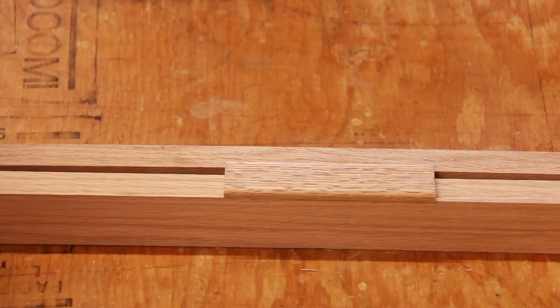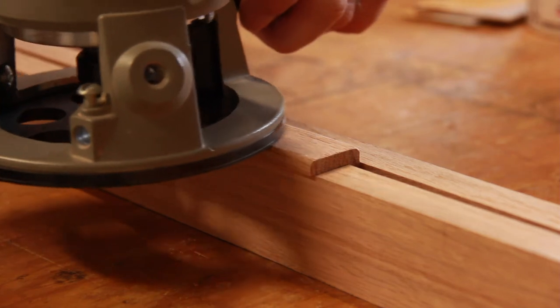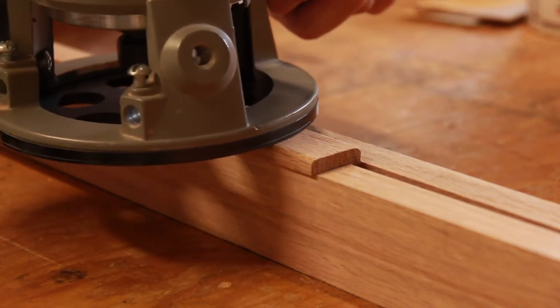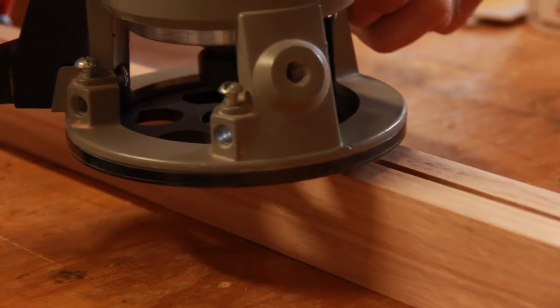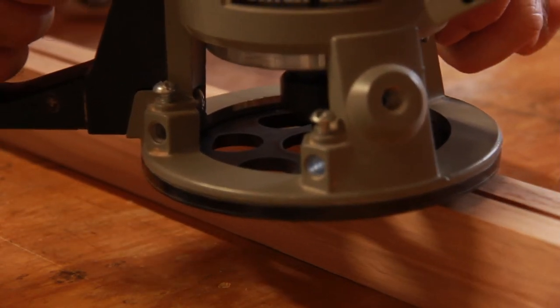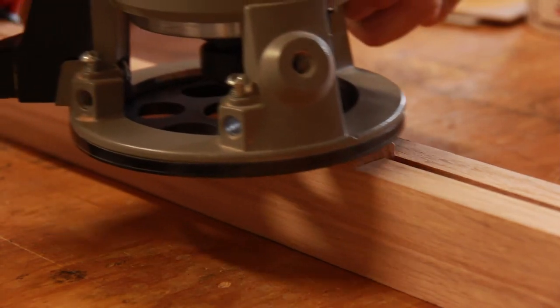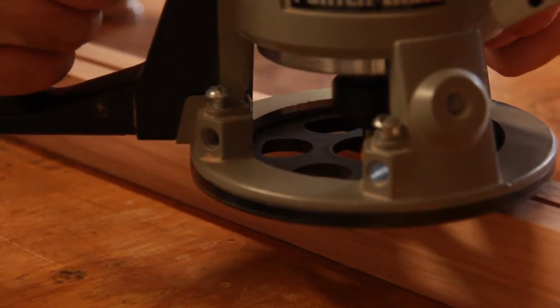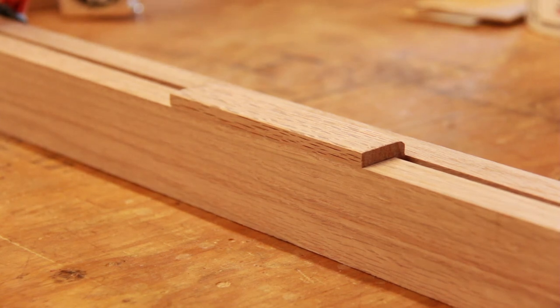To make that happen, we're going to clamp this blank up between a couple of cauls, and the one towards the front is the thickness of the material that we want to end up with. We'll use a flush trim router bit to make those exactly the same dimension. So now that face is exactly the height of the stock.